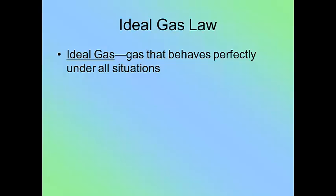So basically what we're going to do is assume that all gases are ideal, so that this way we can have one rule that applies to all of them. An ideal gas is a gas that behaves perfectly under all situations. If we always assume that it behaves perfectly, we don't have to get into the little nitpicky stuff that happens with gases.